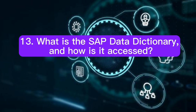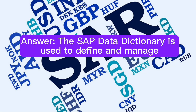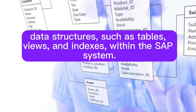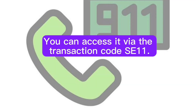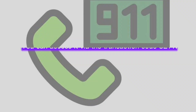Question 13: What is the SAP data dictionary, and how is it accessed? The SAP data dictionary is used to define and manage data structures such as tables, views, and indexes within the SAP system. You can access it via the transaction code SE11.